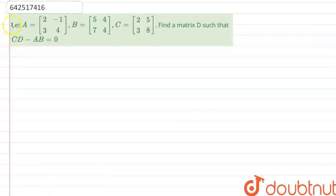Hello everyone, let's start the question. The question says, let A be the matrix 2, negative 1, 3, 4, B be the matrix 5, 4, 7, 4, and C be the matrix 2, 5, 3, 8. Find a matrix D such that CD minus AB is the null matrix.